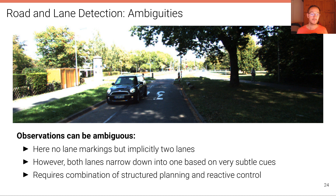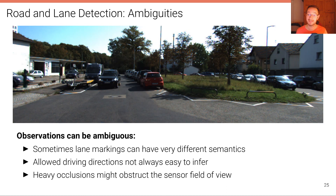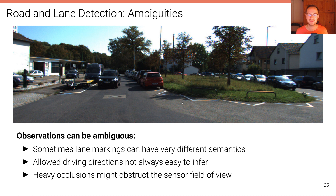Another example shows a road with no lane markings but implicitly two lanes, which narrow to one based on very subtle cues — requiring a combination of structured planning and reactive control to negotiate with potential oncoming traffic. Lane markings can also carry very different semantics, such as indicating no-parking areas. Allowed driving directions may not be easy to infer, and heavy occlusions from other traffic participants, parked vehicles, or buildings are common.